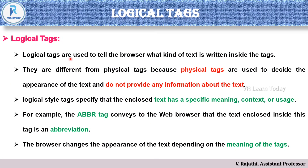Logical tags are used to tell the browser what kind of text is written inside the tag. They are different from physical tags because physical tags are used to decide the appearance of the text and do not provide any information about the text. For example, a physical tag is written as B, and we know B means bold. But with a logical tag, by the tag name itself, someone with coding knowledge can understand its meaning.